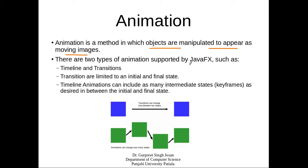There are two ways of animation supported in JavaFX: one is Timeline and another one is Transition. In Transition animation, we have an initial state and a final state. The system will create the moving transition automatically between those two stages — the intermediate stages are generated by the system. It is the simplest form of animation.